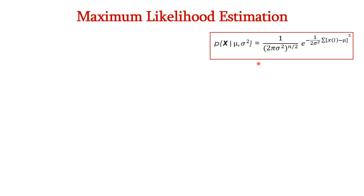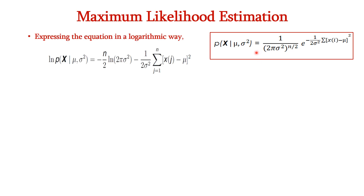Now let us express this probability distribution equation for the full data set in logarithmic form. Applying the logarithm to the first term gives -(n/2) * ln(2*pi*sigma^2), because the log of 1/x is -log(x), and log(x^(n/2)) = (n/2)*log(x). For the exponential term, log(e^(-x)) simplifies to just -x. So the second term becomes -(1/(2*sigma^2)) * sum((x_j - mu)^2).